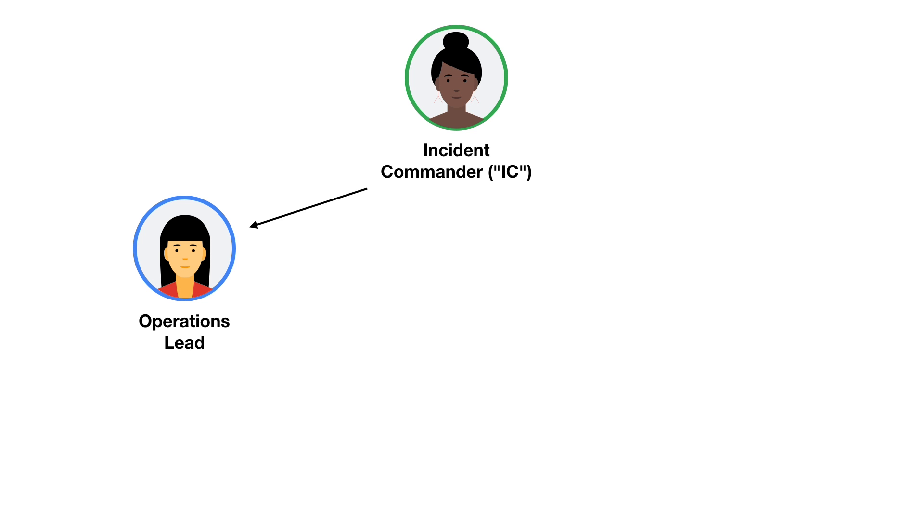The first role that tends to be created is that of the Operations Lead, who is in charge of gaining a detailed understanding of, and actually changing, the state of the system, like running commands, grabbing log files, et cetera. I get that only having one person touching the system makes a lot of sense, but I'm not sure how it's helpful to have the Incident Commander isolated from the details. Don't they need to know all those details?